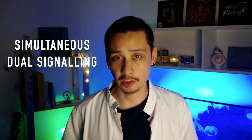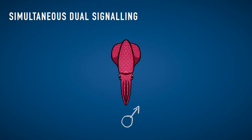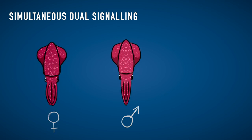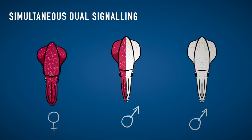Some squids and cuttlefish use simultaneous dual signaling. Cephalopods can change their appearance in a fraction of a second, thanks to a set of organs called chromatophores. Some species use this to show a normal pattern on the side of their body facing the female, while at the same time showing an aggressive pattern on the side facing rival males. During copulation, the male uses the hectocotylus to acquire the spermatophore and pass it to the female.